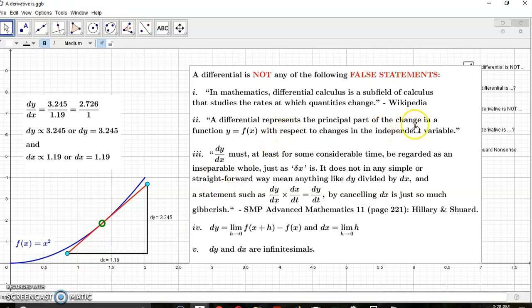The third statement says dy/dx, dy over dx, must at least for some considerable time be regarded as an inseparable whole, just as small delta x is. It does not in any simple or straightforward way mean anything like dy divided by dx.